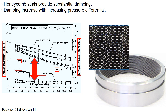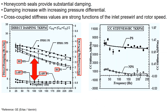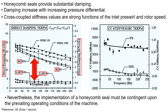Honeycomb seals provide higher damping compared to labyrinth seals, with damping increasing as the pressure differential rises. The cross-coupled stiffness values are highly influenced by the inlet pre-swirl and rotor speeds. Therefore, the implementation of the honeycomb seal should consider the prevailing operating conditions of the machine.